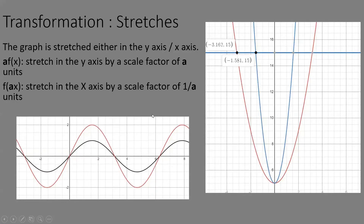Next up we have stretches. The graph is stretched in either the y or x direction. If a is outside f(x) — that is, a times f(x) — it's a stretch in the y-axis by a scale factor of a. For example, the black line is sine x, and the red line is 2 sine x. The y values are all multiplied by 2 — the vertex moves from 1 to 2. You must write: 'stretched in the y-axis by a scale factor of 2.'